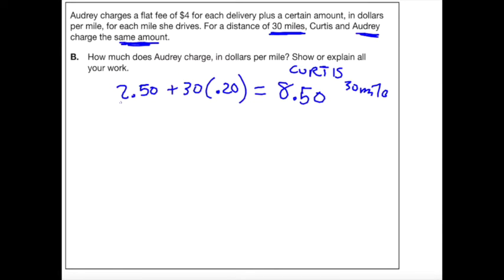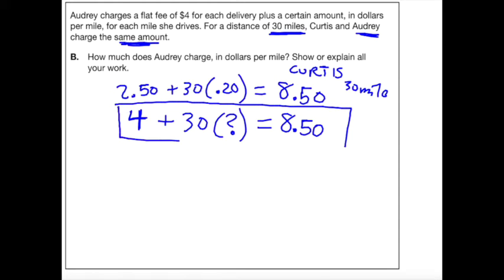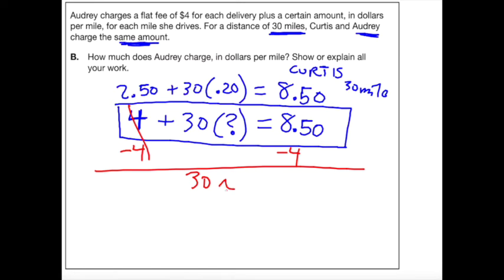We know Audrey starts her initial value. Her flat rate is $4.00. And she charges some unknown amount for each mile. But we know that the answer is still going to come out as $8.50. This right here looks like a nice, easy, two-step algebra equation like you've been working on. If I want to figure out what the question mark is, I can subtract 4. I'll have 30 times something equals $4.50. And then I can divide by 30. And that something equals $0.15.